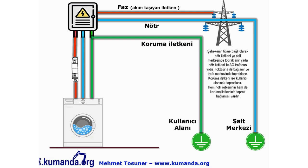Hem nötr iletkeninin hem de koruma iletkeninin toprak bağlantısı vardır. Şebeke bize faz ve nötür verir. TT şebekede şant merkezinde nötr iletkeni topraklanır; TN şebekede ise AG dağıtım trafosunun sekonderi yıldız noktasıyla birlikte topraklanır. Koruma iletkenimiz ise kullanıcı alanında, örneğin binaya çakılan topraklama kazıklarıyla toprağa verilir.